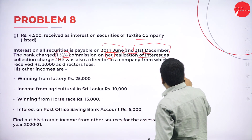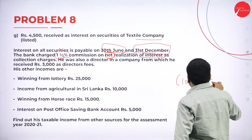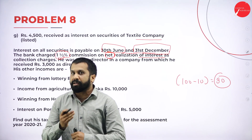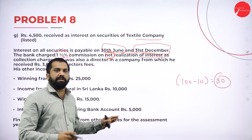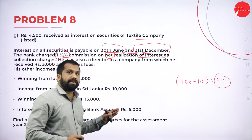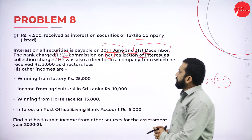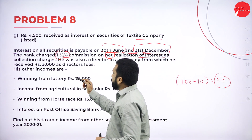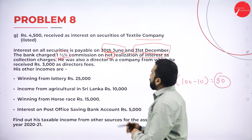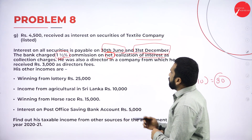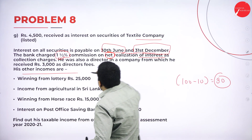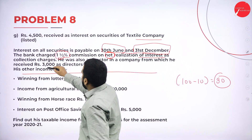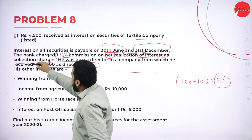All the interest comes under 10% tax. 10% means: 100 minus 10 is equal to 90. So if you divide by 90, you will get your gross value. Everything is in net value; if you divide by 90 you will get the gross value. As per this, interest on all securities is payable. Then we have winning from lottery, and income from agriculture — up to this point, all information is about interest. From rupees 3,000 received as director fees onward, it is a separate part.